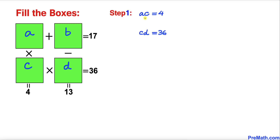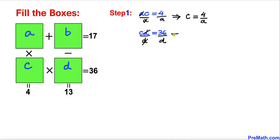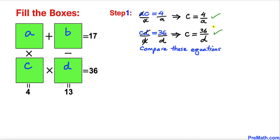Now let's manipulate these two equations. Dividing both sides of the first equation by A, we get C equals 4 divided by A. Likewise, dividing the second equation by D on both sides, we get C equals 36 divided by D.